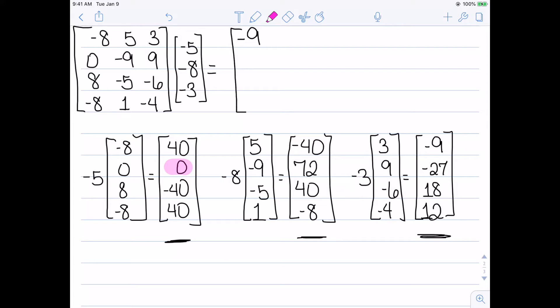My second entry comes from 0 plus 72 minus 27, which gives me 45.